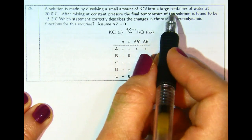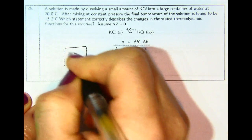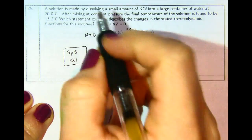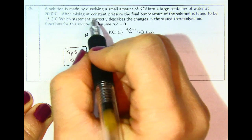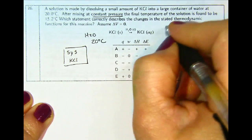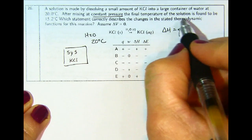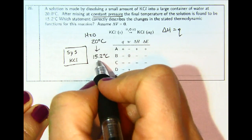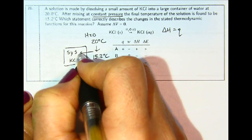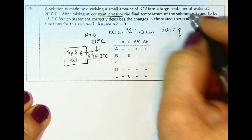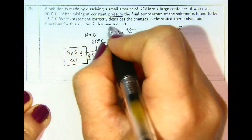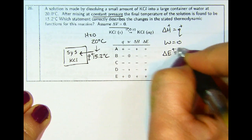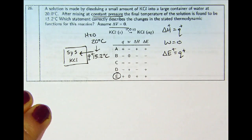A solution is made by dissolving KCl into a large container of water. The water is at 20 degrees Celsius. After mixing at constant pressure — so delta H equals Q — the final temperature is 15.2 degrees Celsius. The solution cooled down, meaning heat was removed from it, giving a positive Q and therefore positive delta H. At constant volume, work equals zero, so delta E also equals Q, making both positive. We choose E for our answer.